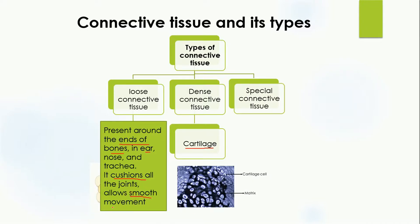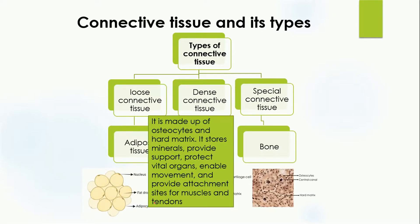An example of special connective tissue is bone. Bone tissue is made up of osteocytes, which are bone cells present in the hard matrix. Bone cells store minerals — specifically calcium and phosphorus. Bones provide support and protect vital organs; for example, the skull protects the brain and the ribs protect the lungs and heart. Bones also enable movement and provide attachment sites for muscles and tendons.